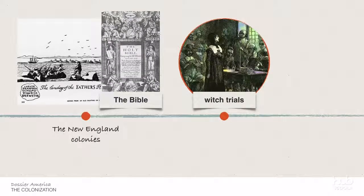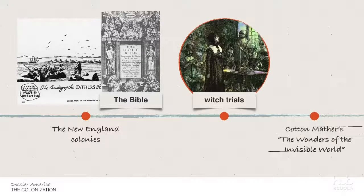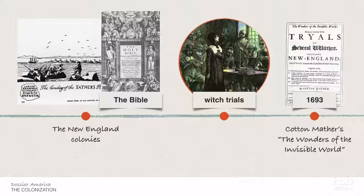Biblical references and imagery were quite common in works of the time. The first printing press was created in 1639 in Cambridge, Massachusetts, and the first work produced was A Model of Christian Charity. Cotton Mather's The Wonders of the Invisible World is one of the key works of this time. Mather used the text as a defense of the witch trials.